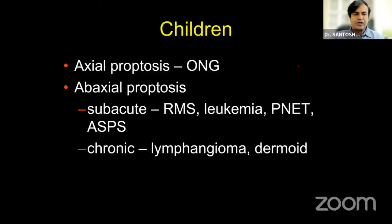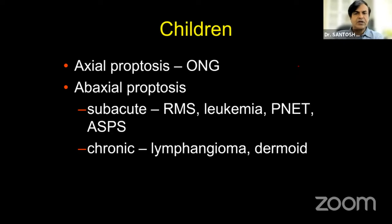In children, if you classify proptosis as axial or abaxial, the most common cause for axial proptosis in children is optic nerve glioma. If you have a child with unilateral or bilateral axial proptosis, look for stigmata of neurofibromatosis — look for café-au-lait spots, all major and minor signs, Lisch nodules on the iris, and skin manifestations. Neurofibromatosis is associated with optic nerve glioma, though ONG can also happen without neurofibromatosis.